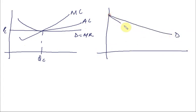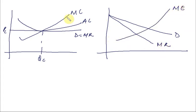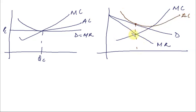In monopolistic competition, I'm talking about the long run. We have a downward-sloping demand curve. This is where MC is, and AC is right here. Our equilibrium is occurring at point one, giving us the price at point two.